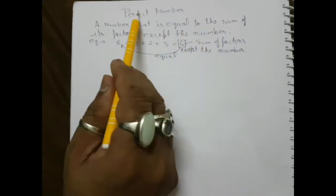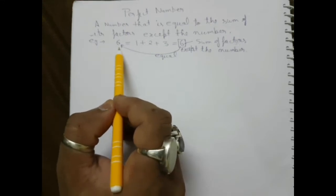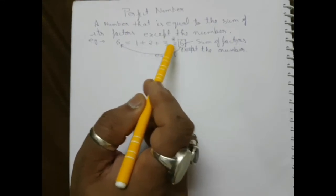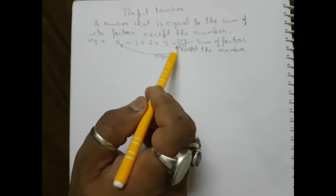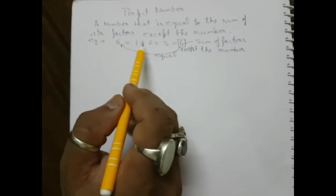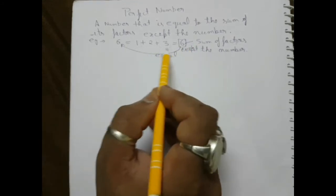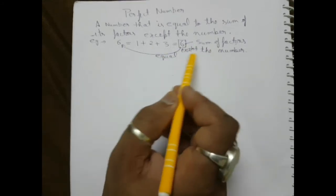You can see the number is six. The factors are one, two, three. The number itself is also a factor, but we will not include it. So for number six, only one, two, and three have been taken. When we perform the sum of these three factors, we get six, which is equal to the number.